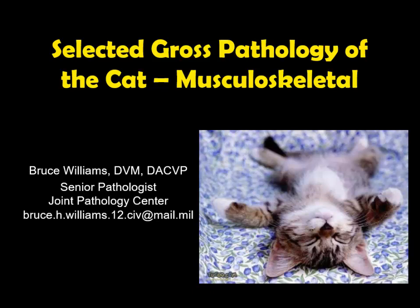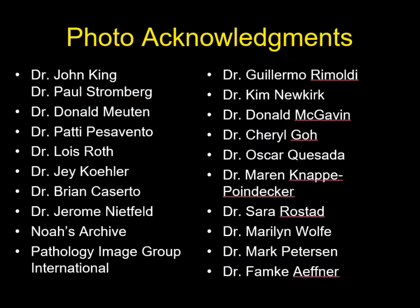Hello, it's Bruce Williams again. Today I want to present Part 11 on my series of the selected gross pathology of the cat, in which we're going to talk about the musculoskeletal system. As I do at the beginning of all of my lectures, I want to thank those friends and colleagues who provided me great images over the years which allow me to put these lectures together.